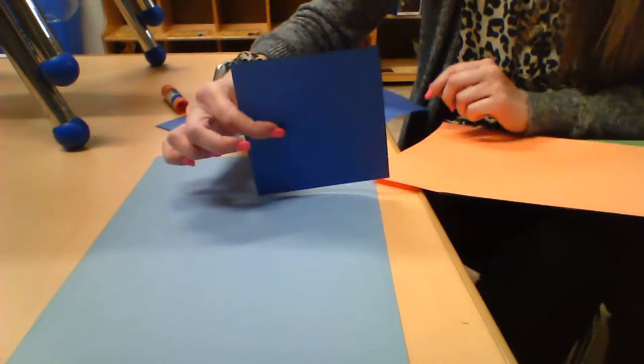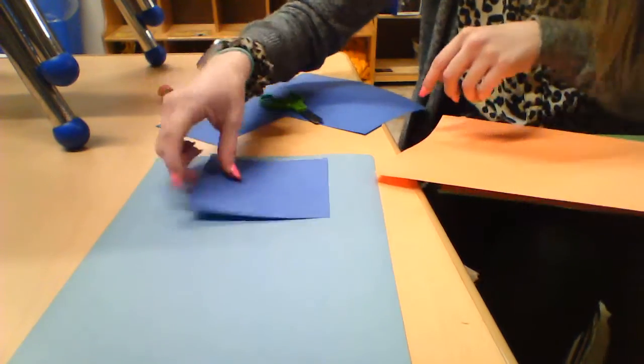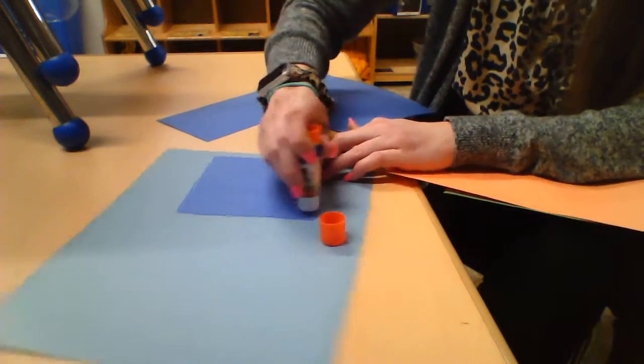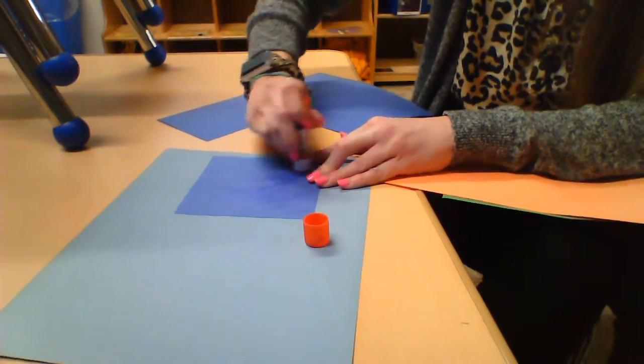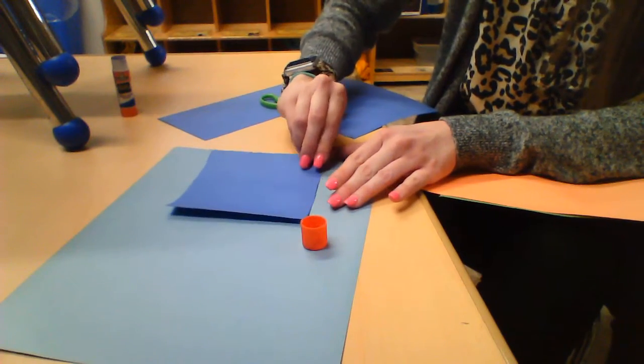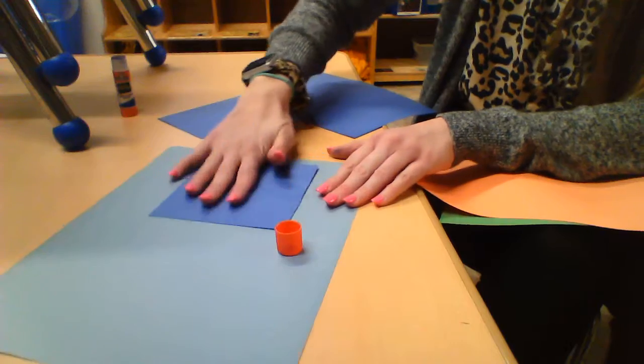Right now I have a square, so I'm going to put some glue on the back and stick it down to my paper. So now I have the house part.